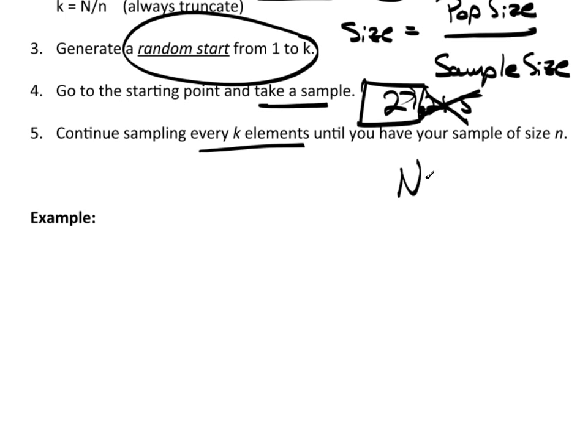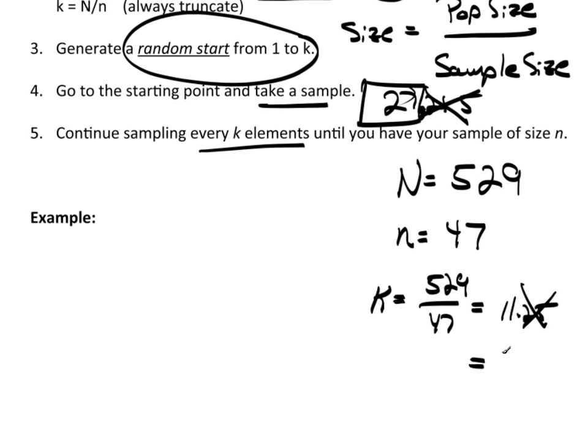Let's go ahead and work on an example. Let's just say our population happens to be 529. It's a very small population. And let's just say as an example that n equals 47. So I can afford to get a sample of 47 out of this population. So what I need to do is grab a calculator or some piece of technology, or do it by longhand if you want. And I'm going to need to find k. k equals 529 divided by 47, which equals 11.25 and some more. I'm going to truncate and say k is 11.